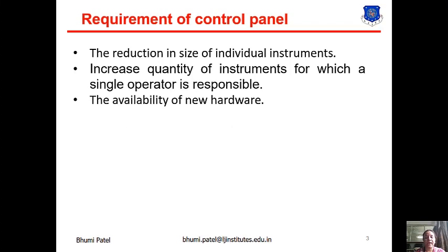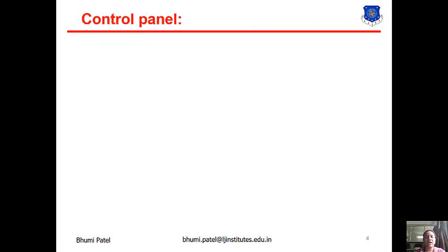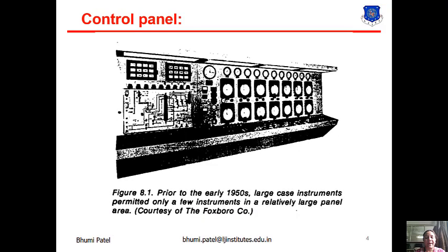The next requirement is the availability of new hardware. If we install new hardware in the same panel, there is available space in the control panel. This is the control panel used in the early 1950s — large case instruments permitted only a few instruments in a relatively large panel area. The panel is called a PLC control panel when a PLC is installed with associated wiring and power supply. If a panel has a pneumatic controller and indicator operated by air, it is called a pneumatic control panel, associated with controller, transducer, gauge, etc.